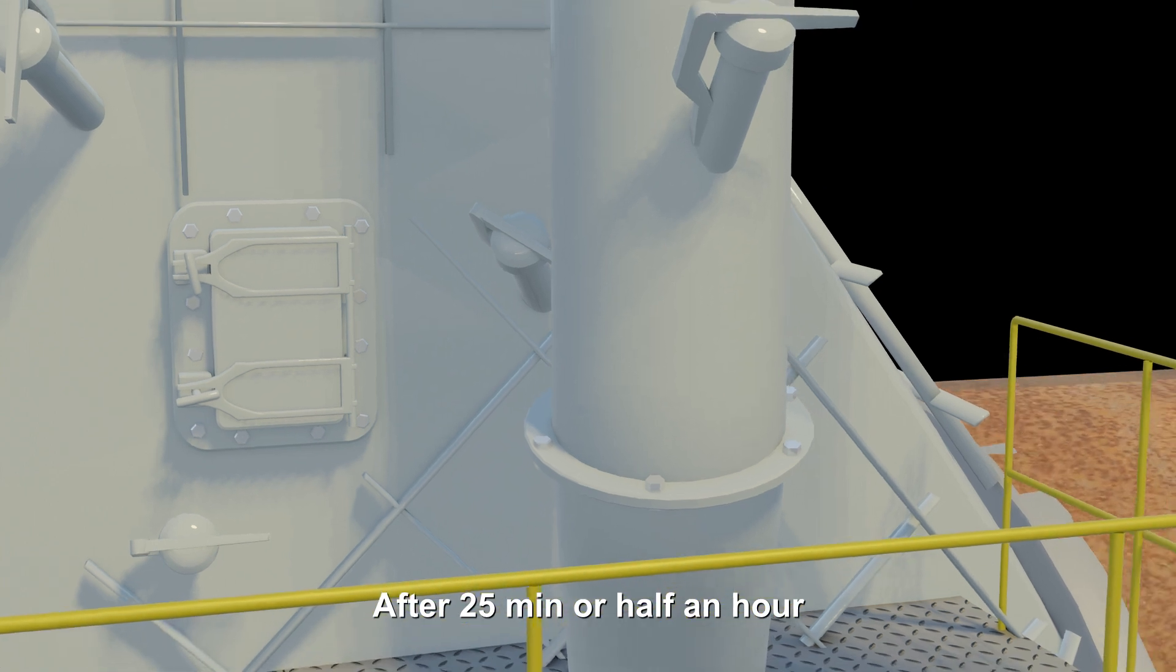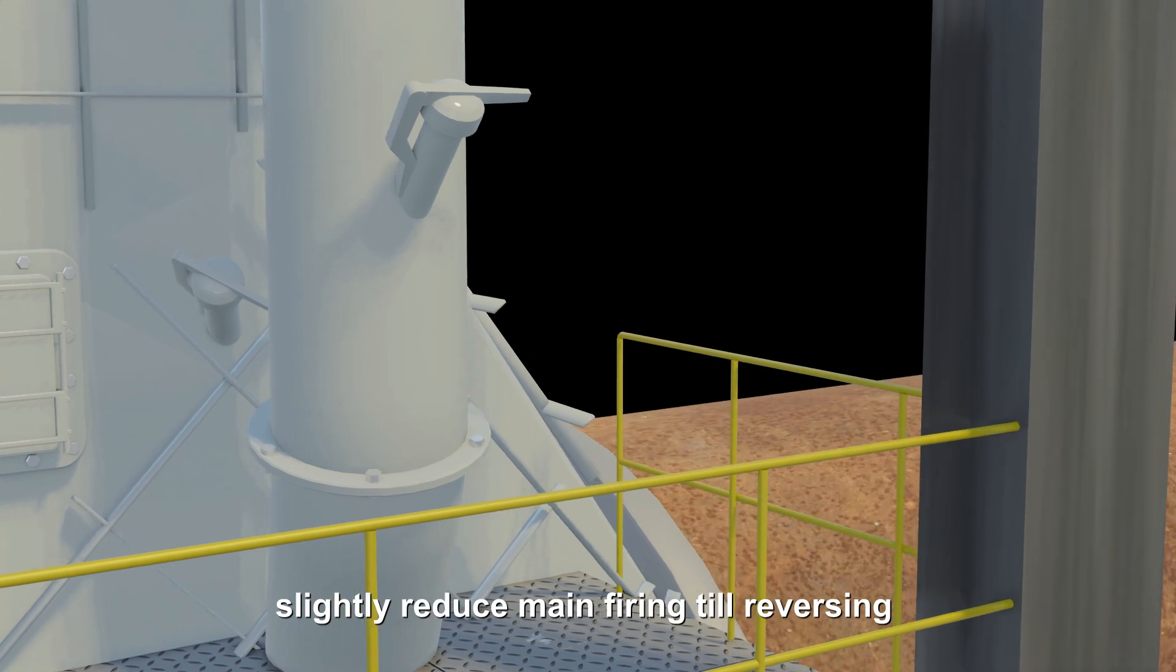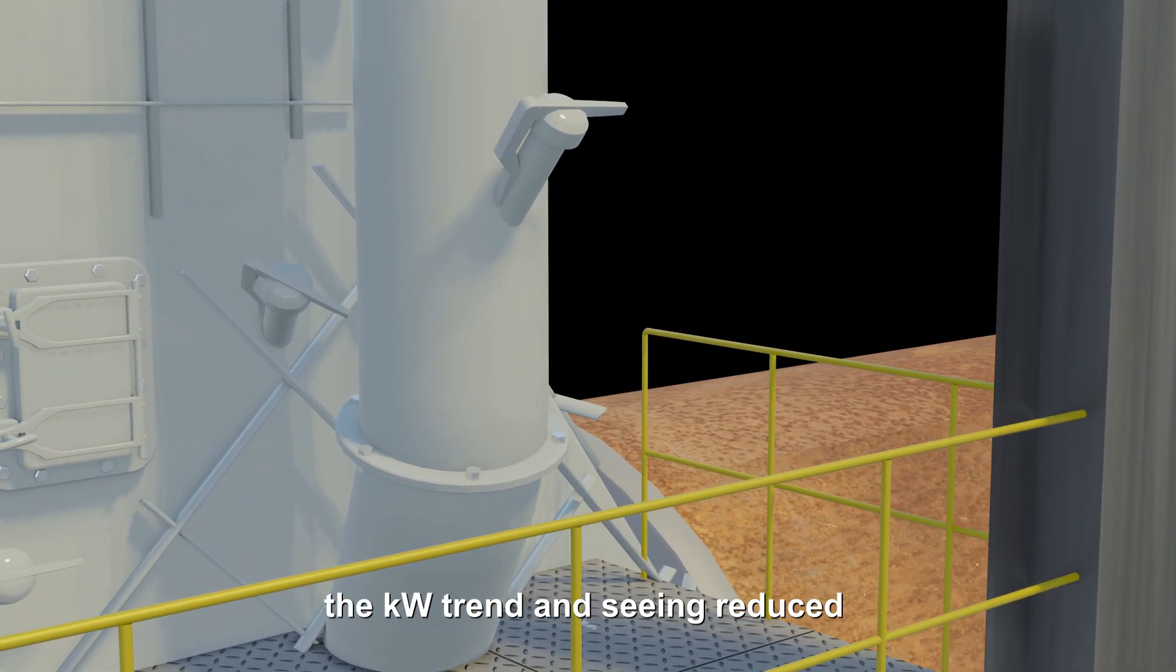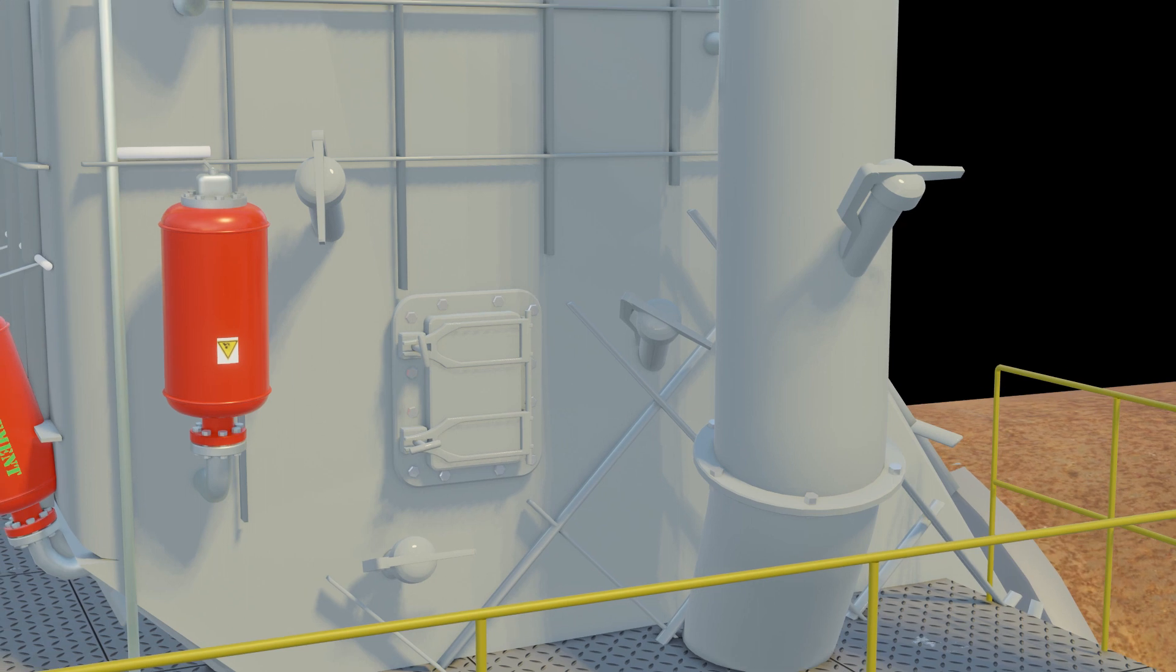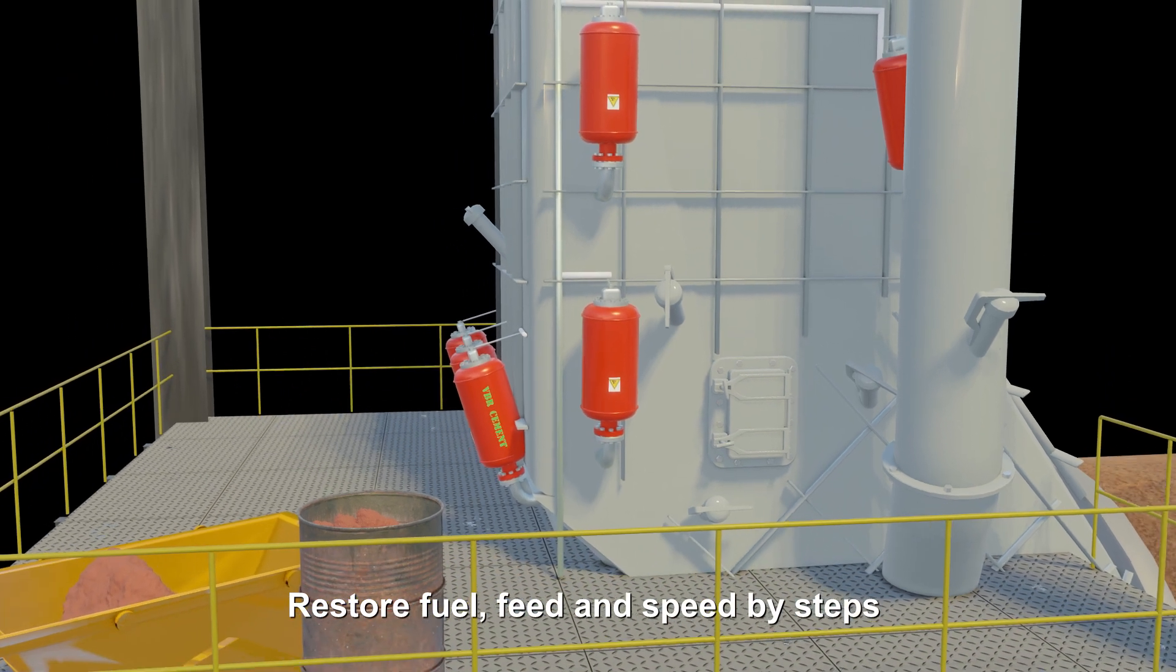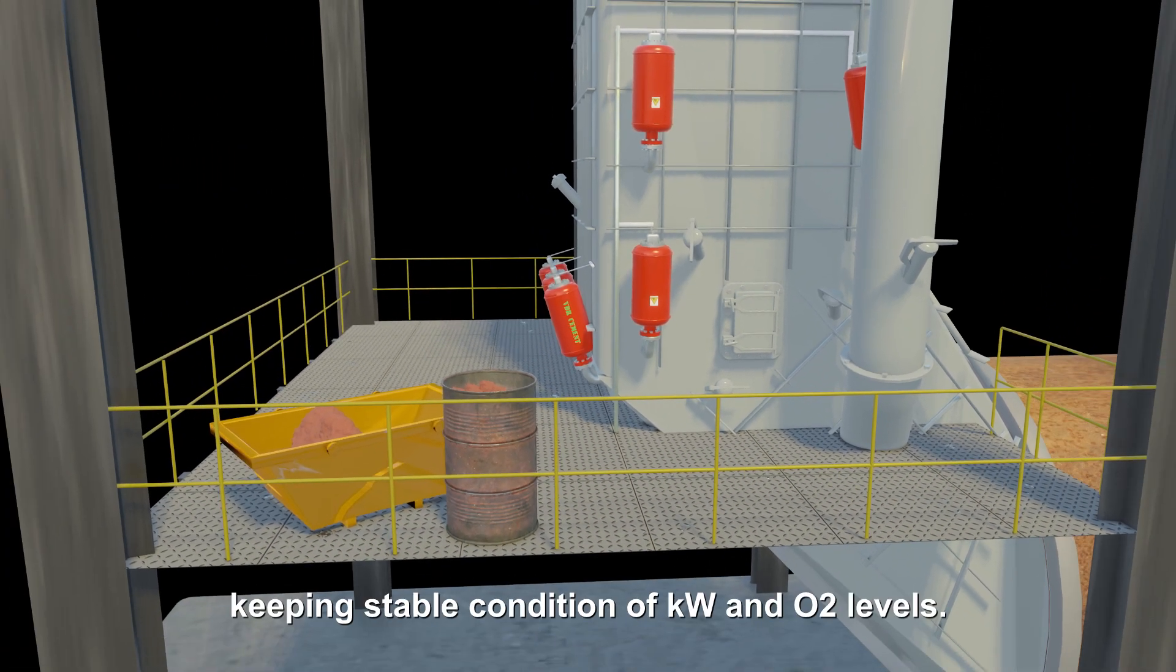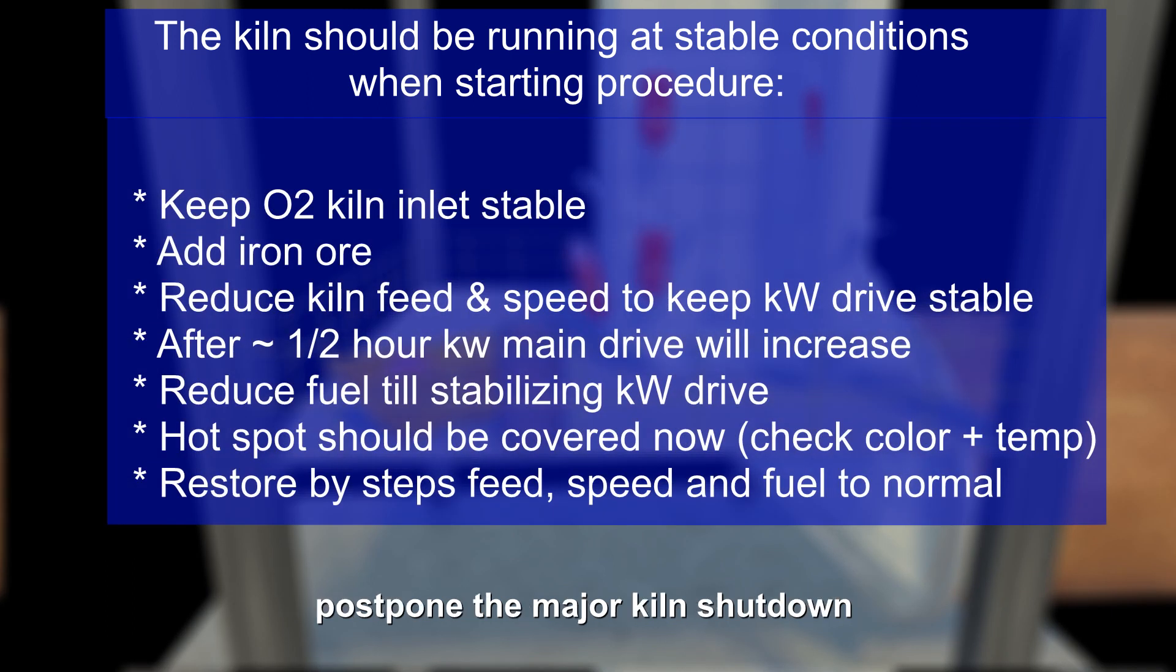After 25 minutes or half an hour, kilowatt main drive should start increasing. Slightly reduce main firing till reversing the kilowatt trend and seeing reduced hot spot color and temperature. O2 levels will be slightly high. Restore fuel, feed, and speed by steps, keeping stable conditions of kilowatt and O2 levels. This flux curing procedure will help to postpone the major kiln shutdown at least for a few days. With stable feed quality and firing conditions, this patch will last longer.